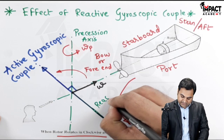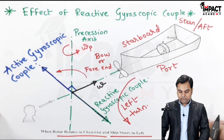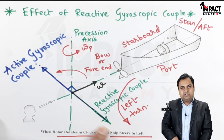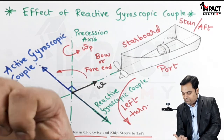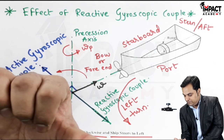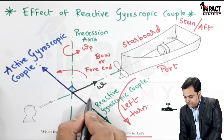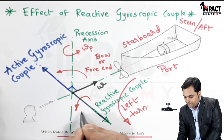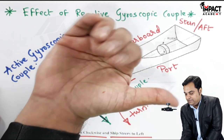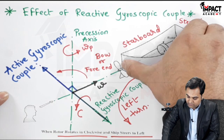Just opposite to the active gyroscopic couple, on the same line, there will be the reactive gyroscopic couple. Once I get the reactive gyroscopic couple vector, I match the right-hand thumb with the direction of this reactive gyroscopic couple vector. The curling fingers show the direction of the reactive gyroscopic couple, and this same couple would be transferred to the ship.